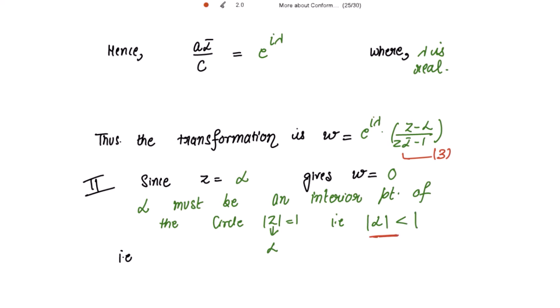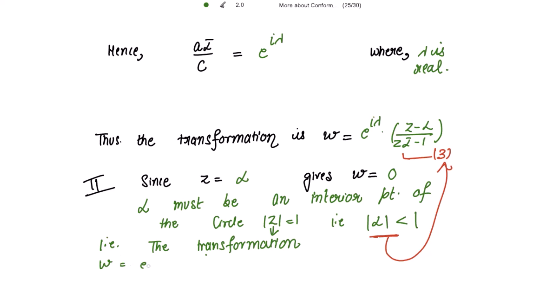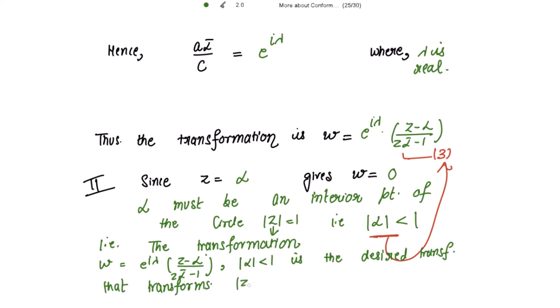With this condition, transformation 3 is the desired transformation which maps the unit circular disk |z| ≤ 1 onto the unit circular disk |w| ≤ 1. That is: w = e^(iλ) · (z - α)/(zᾱ - 1) with the condition |α| < 1 is the desired transformation.